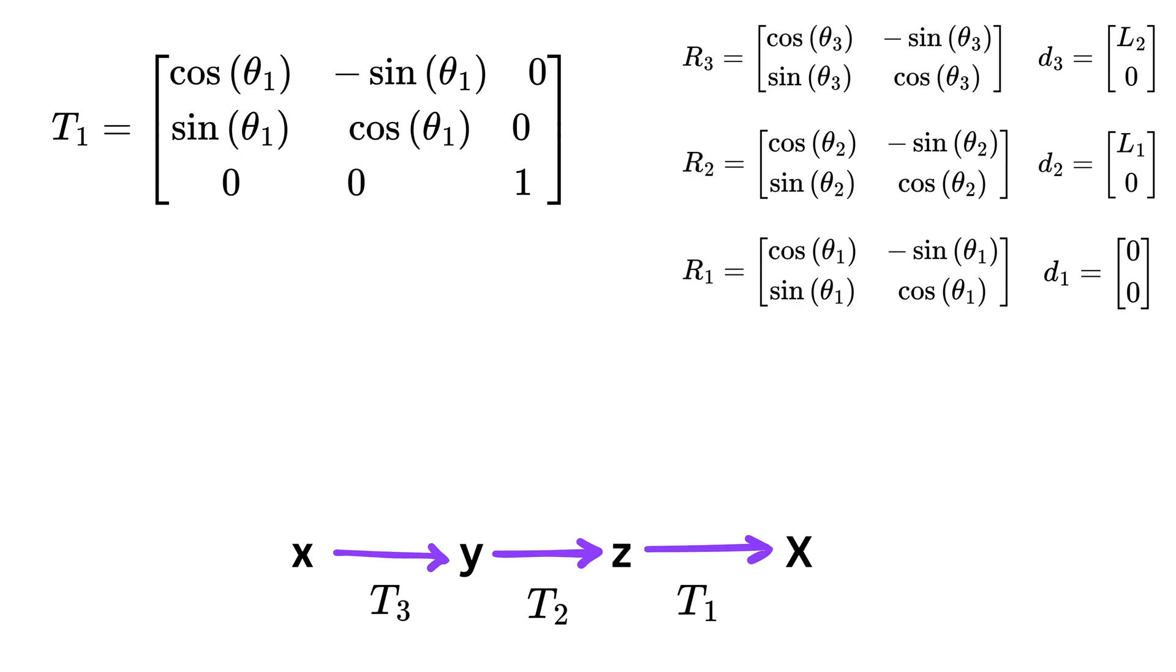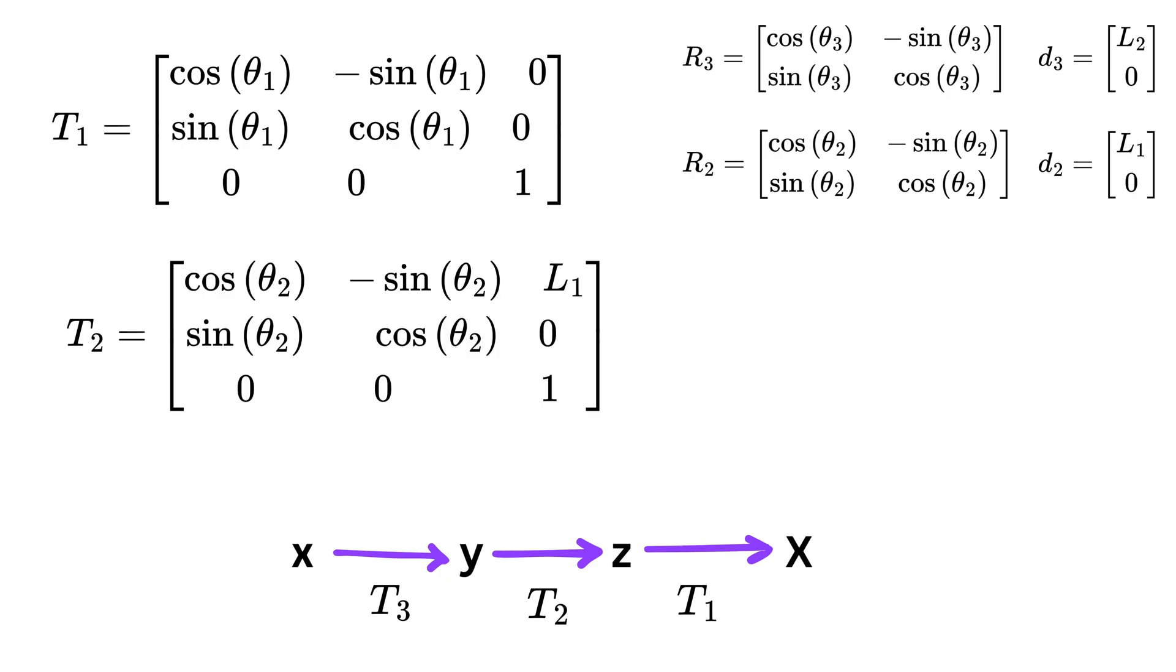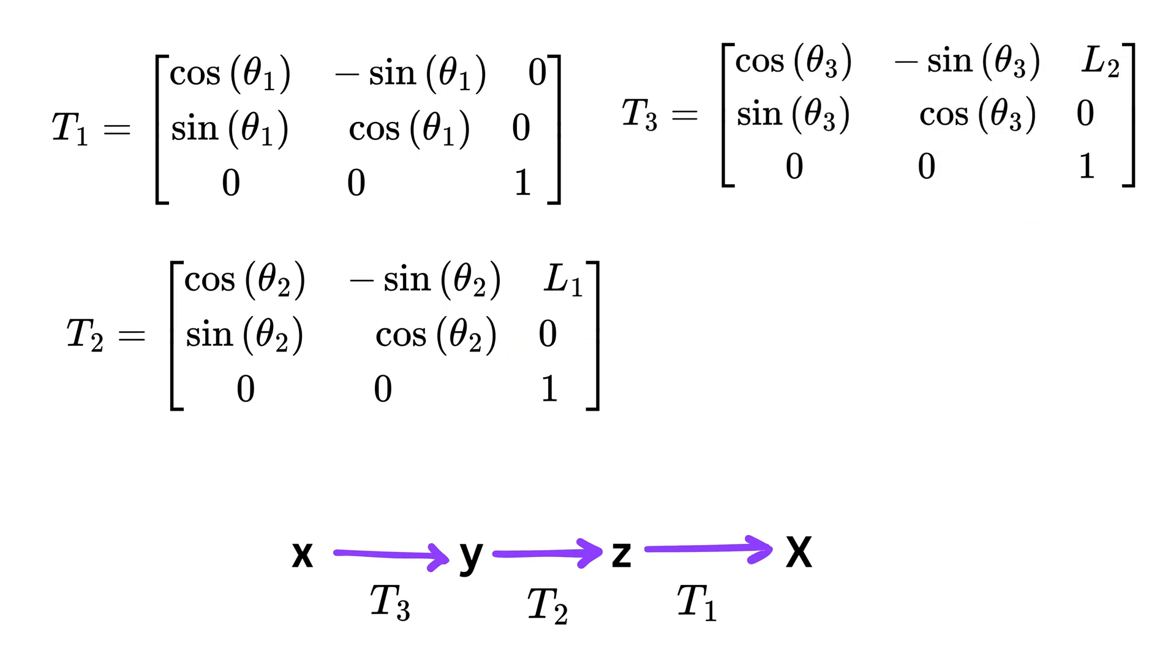So T1 will look like this. Note we have theta 1 here in the rotation matrix and this is 0, 0 because our d1 is 0, 0. Then T2 will look like this. This is the rotation part and see how the translation part has L1 and 0 here, and finally T3 will look like this.